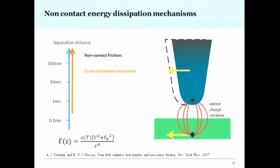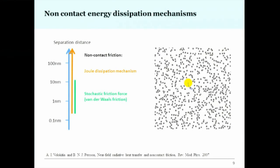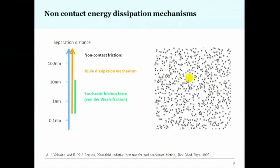Looking at the damping coefficient for Joule dissipation, because it is an electrostatic interaction it has a voltage-squared dependence. The distance dependence varies depending on whether we have an insulator only, a metal, or a metal on insulator — so we need some knowledge of our sample, but we can determine this distance dependence from the data.